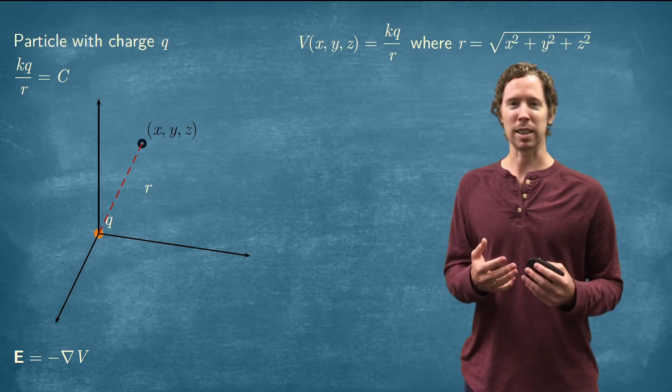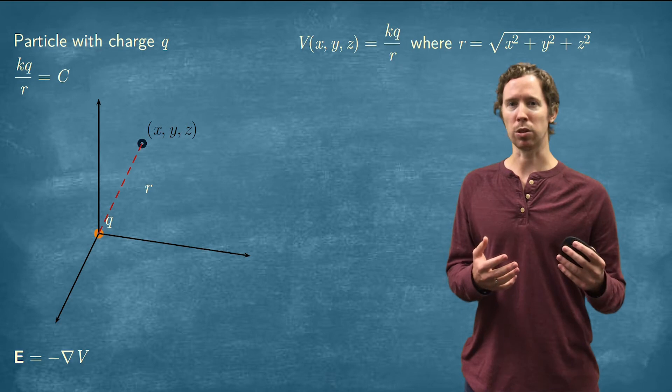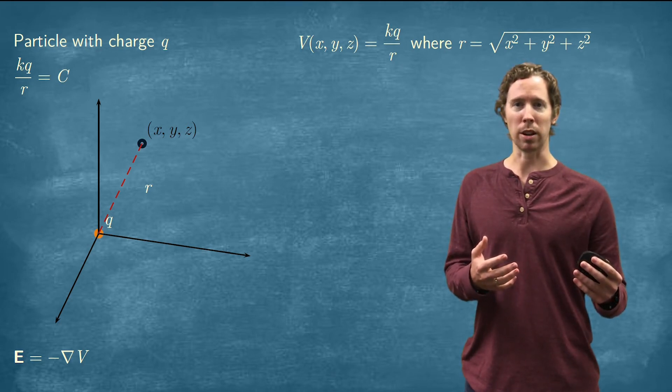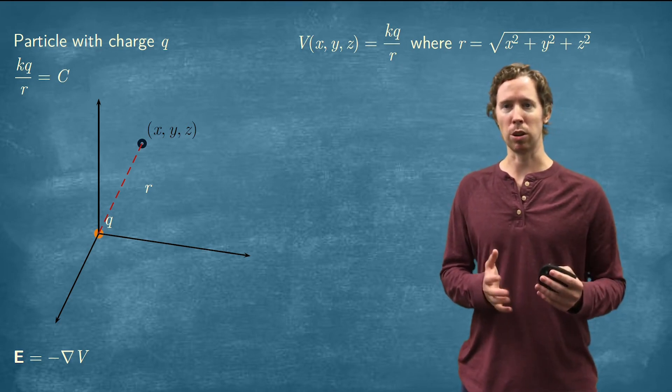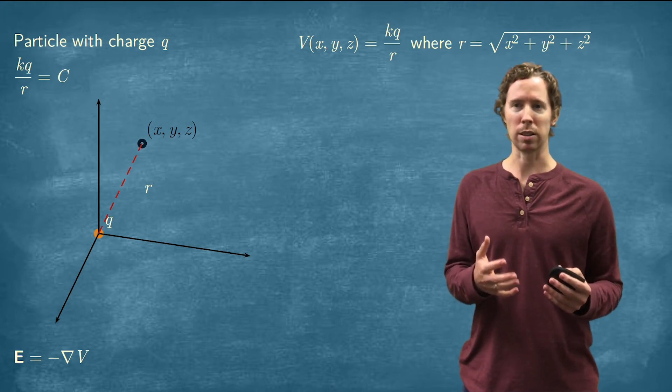So as that distance gets big, the electric potential goes down. As that distance R gets small, the electric potential goes up. The whole fraction gets larger.